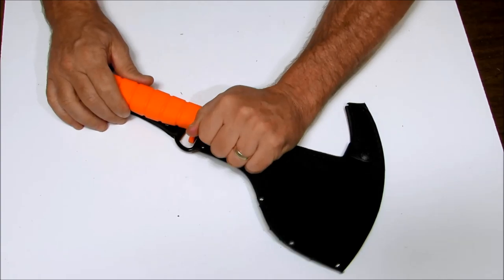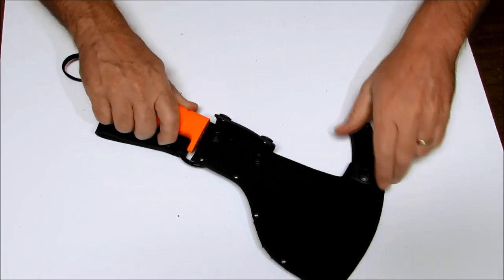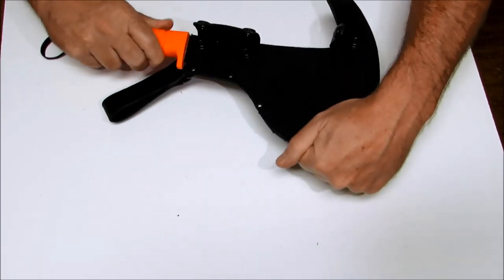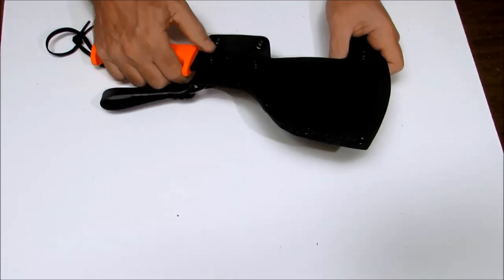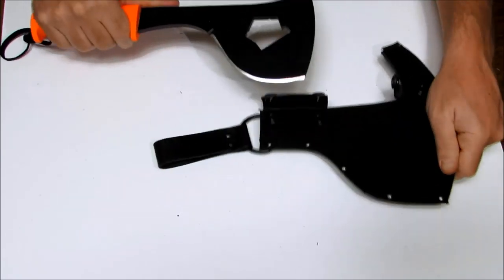Today on Oso Grande Knives TV we are looking at the Ontario SP-16 SPACs. This is the orange firefighter tool or breaching axe by Ontario.